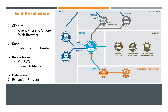When a job is deployed, TAC talks to Nexus, brings in the latest copy of the built code, and then deploys it to a job server. All execution on the job server is monitored by Talend Administration Center, which shows the log whether the execution was successful or failed.